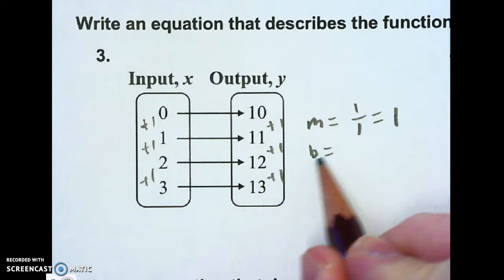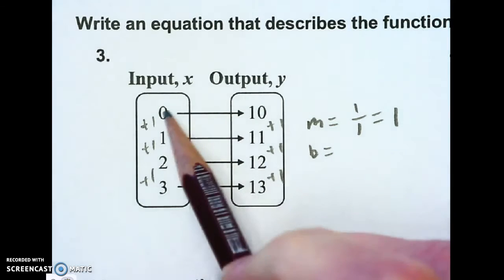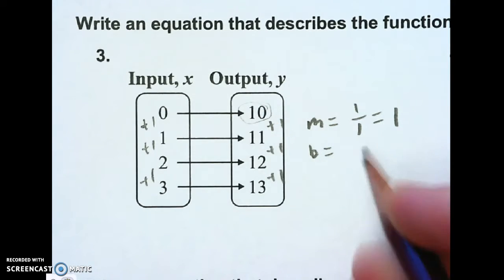And then my y-intercept, my b-value, is where x is 0. I look across, and there it is, 10.